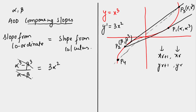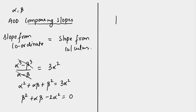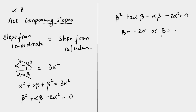Cancelling the (alpha − beta) factor, we get alpha² + alpha·beta + beta² = 3α². Rearranging: beta² + alpha·beta − 2α² = 0, which factors as (beta + 2α)(beta − α) = 0. This gives beta = −2α or beta = α. Since P1 and P2 are distinct points, beta ≠ alpha, so beta = −2α is our answer.